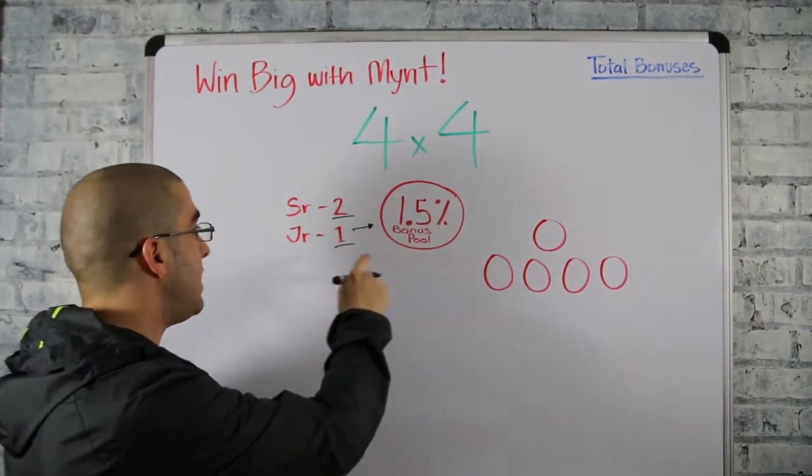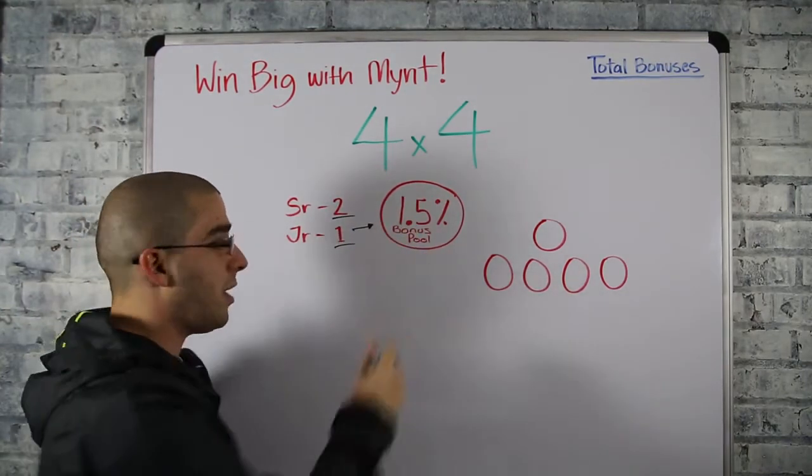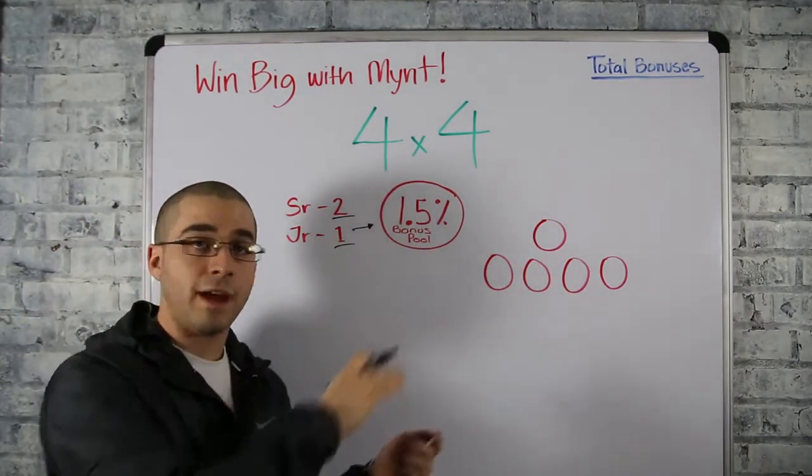If you get a senior kit you get two points or two shares into that bonus pool. Junior kit you get one, and we're gonna show you a little bit in depth how that works.